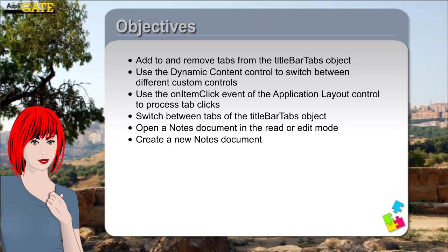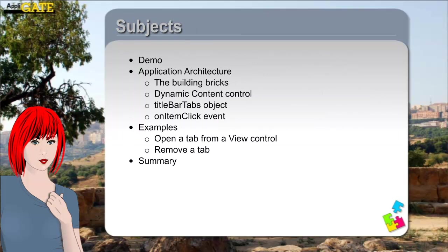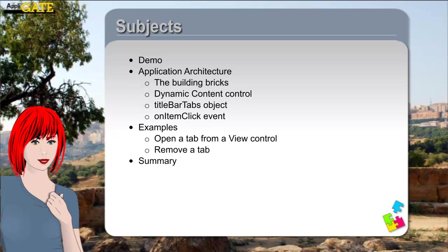To be able to manage the tabs, you have to understand how to use the on-item click event of the application layout. First we show you the main features of this mini-course in a video. Then we look at how the application has been structured. We will discuss the new Dynamic Content Control, and how to switch between the two custom controls we use in this application to display data of an employee.